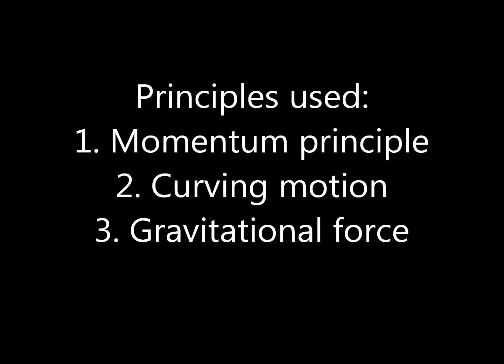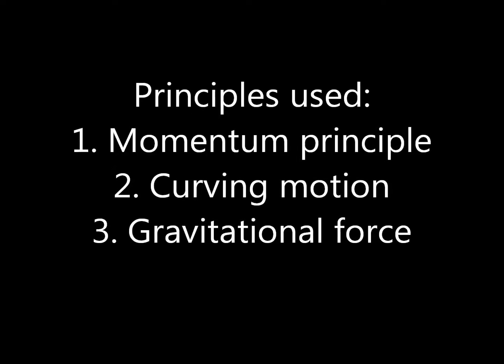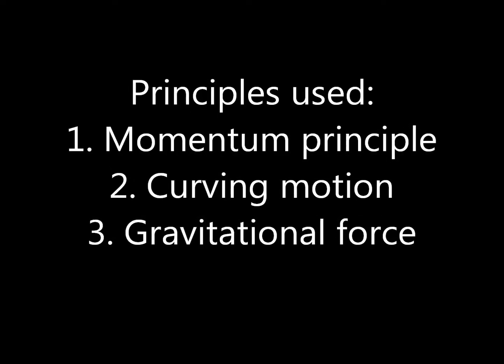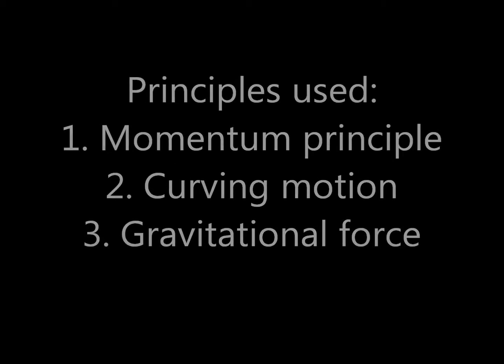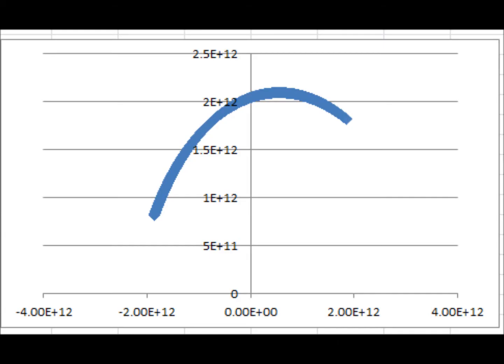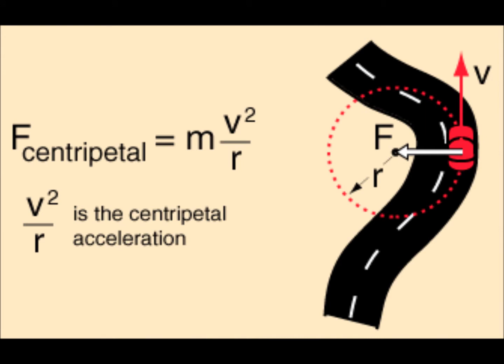We assume in our model that the gravitational force of the black hole is the only force acting on the star. When we graph the x and y coordinates of the star's motion against each other, we can see that the motion of the star resembles the arc of an ellipse. We know that for objects to change direction, they must have a net force acting on them in a different direction from the direction of their momentum.